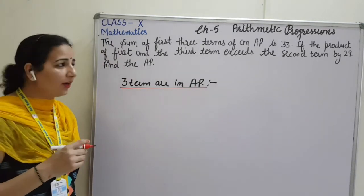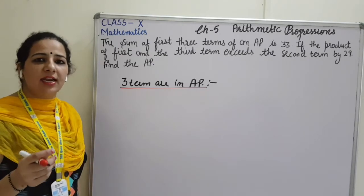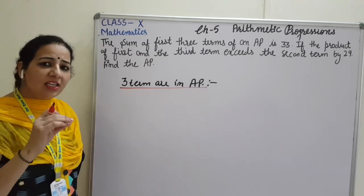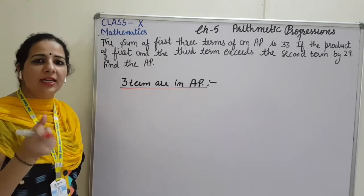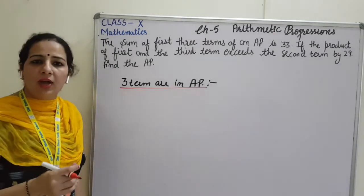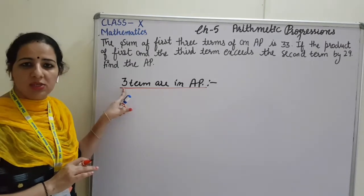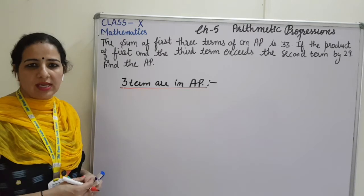In the last class, in that question, they have given the 3 terms: 2X, X plus 10, 3X plus 2. In that they just have missing one value, that is X. Here they have not given any value of the AP terms. So here, you have to assume the value yourself.